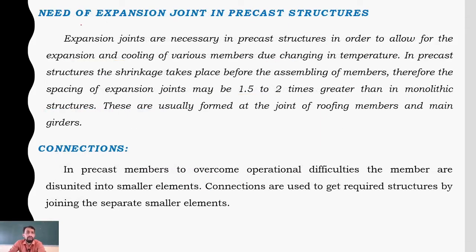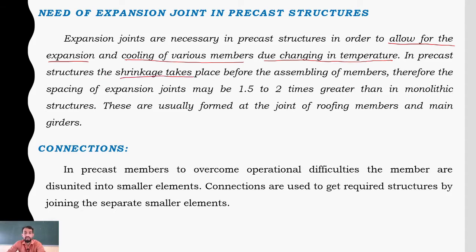The need for expansion joints: expansion joints are necessary in precast in order to allow for expansion and cooling of various members due to changing temperature. In precast structures, the shrinkage takes place before the assembling of members. Therefore, spacing of expansion joints may be 1.5 to 2 times greater than in a monolithic structure.